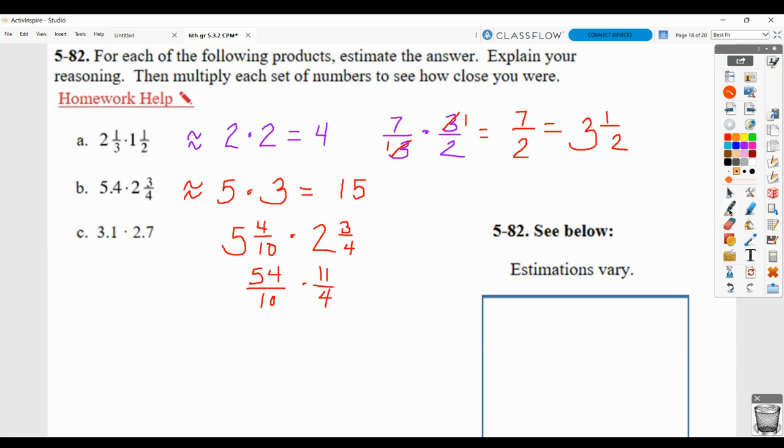We can do a little bit of simplifying at least. We can divide 54 and 4, both by 2 for sure. It does not look as if we can divide it by 4, so just by 2. So 4 divided by 2 is 2. 54 divided by 2 is 27. We'd look to see if there's anything else we could simplify. Numerator with a denominator, but it doesn't look like it can. So 27 times 11 is 297. 10 times 2 is 20.